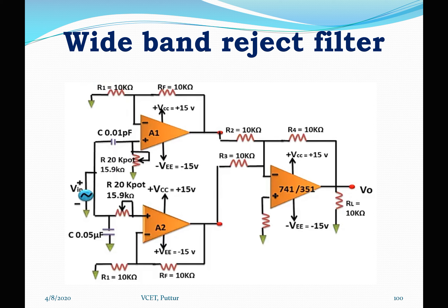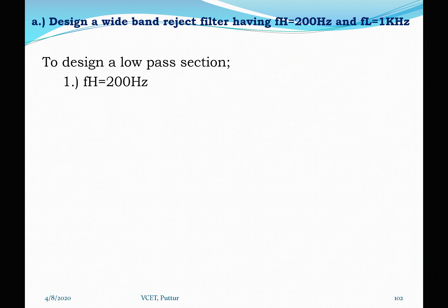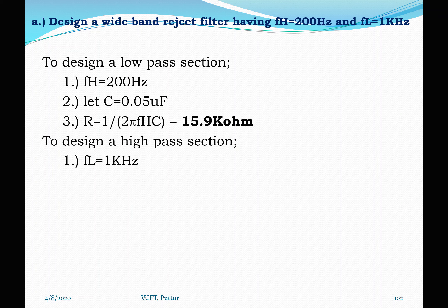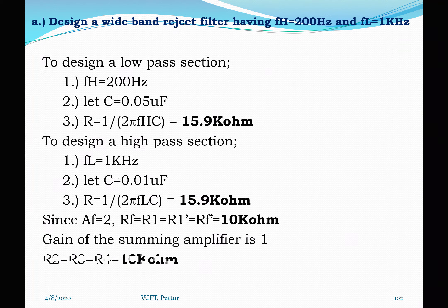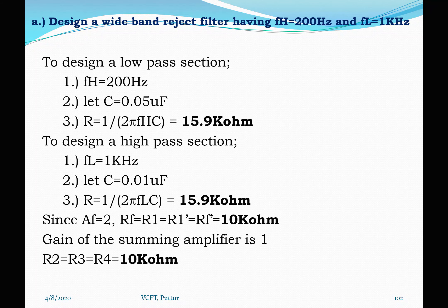In the circuit, 15.9 kΩ resistors and capacitors of 0.01 μF (high pass) and 0.05 μF (low pass) are used. The op-amp outputs connect to R2, R3, and R4 at 10 kΩ each. The complete circuit is drawn, and in the frequency response, FH = 200 Hz and FL = 1 kHz define the rejected band of 200 Hz to 1 kHz, which is the wide band portion.